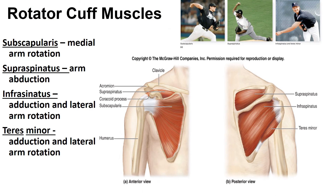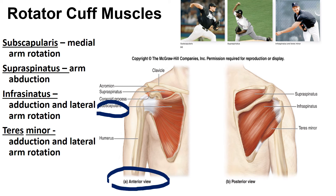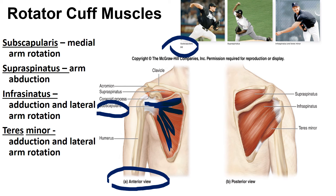The rotator cuff muscles are a set of four muscles that help provide strength and stability for the glenohumeral joint. The first one, the subscapularis, is the only rotator cuff muscle found on the anterior side, occupying the entire fossa of the scapula. This is the muscle responsible for medial rotation of the arm — for example, when a pitcher goes to wind up for a pitch, the subscapularis is the one that is contracting.